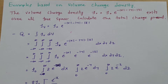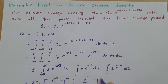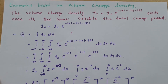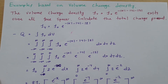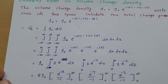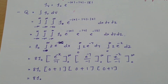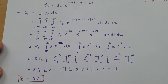Evaluating each integral: e^(-x) integrates to e^(-x)/(-1). With limits from 0 to infinity: at infinity, e^(-∞) = 0; at 0, e^0 = 1, so the result is 1 for each integral. Similarly for y and z, each gives 1. Therefore the total charge Q = 8 * rho_0.